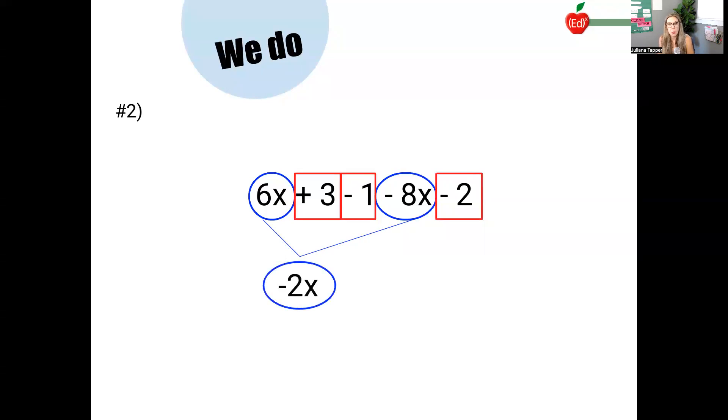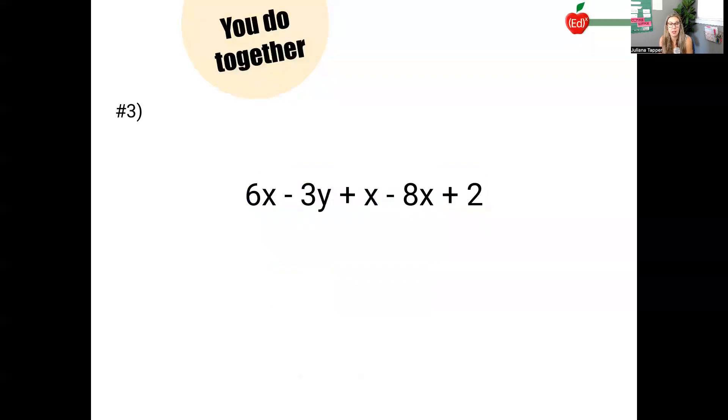3 minus 1 gives me 2. 2 minus 2 gives me 0. So I end up, I don't combine these. These are blue circles and red squares. I don't combine those. They are not like terms. I end up with just negative 2x. That's my final answer.